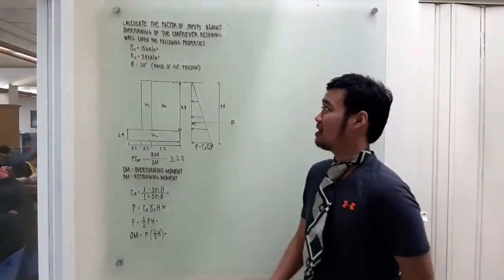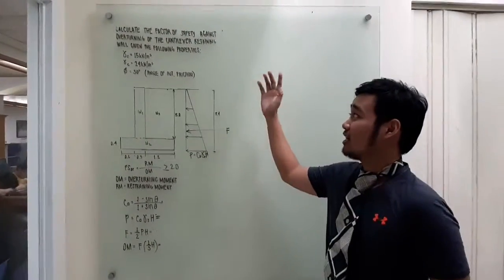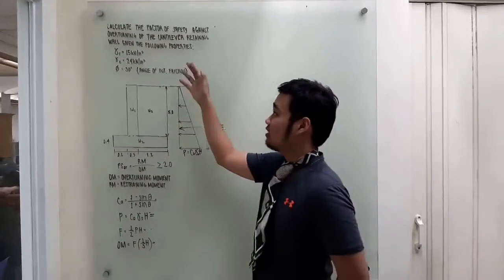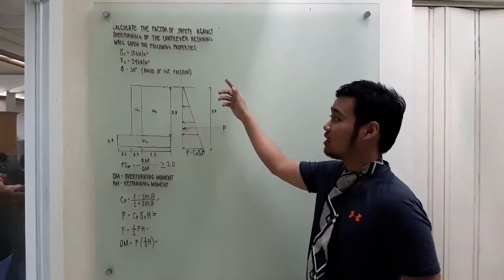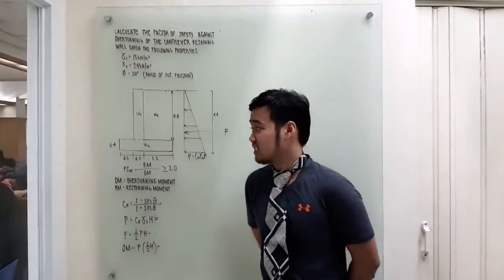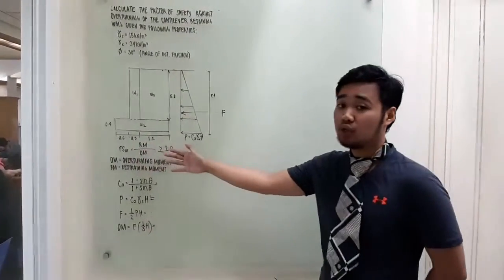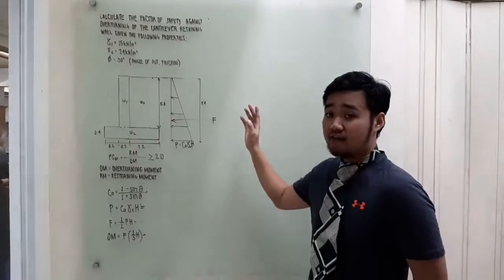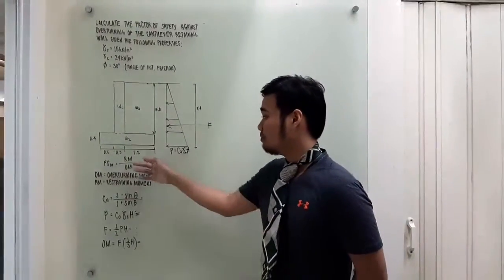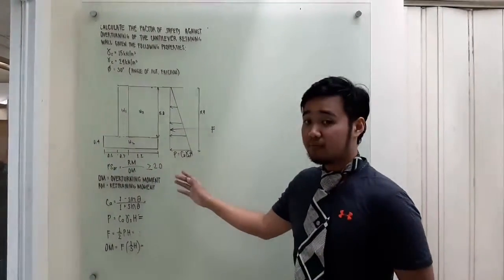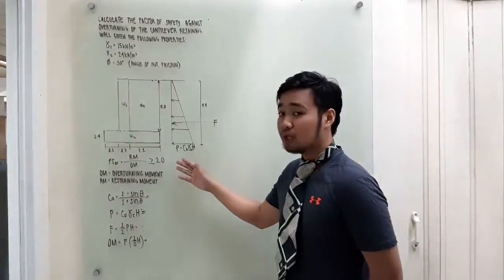I am Alisandro Bucat and this is a sample problem about a cantilever retaining wall. We are to calculate the factor of safety against overturning. The density of soil is 15 kN/m³, the density of concrete is 24 kN/m³, and the angle of internal friction is 30 degrees. The base is 0.6 + 0.3 + 1.2 = 2.1 m and the overall height is 5.4 m. The factor of safety against overturning must be greater than or equal to 2.0.